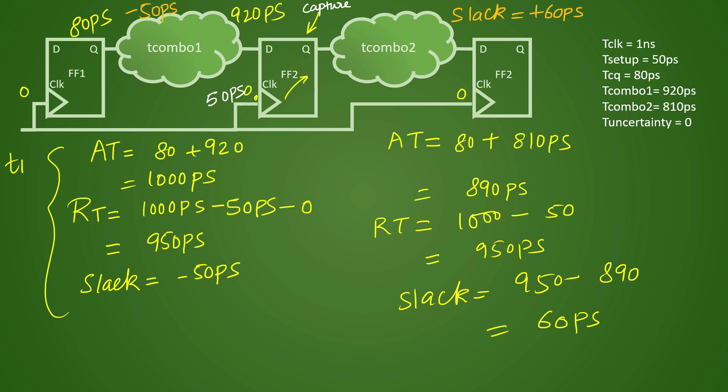In that case, what will happen is your clock network delay for this particular FF2 will add 50 picoseconds. And when it adds, your T clock will minus this, but here it will add your 50 picoseconds, it will not be zero, it will add 50 picoseconds of latency in this case.